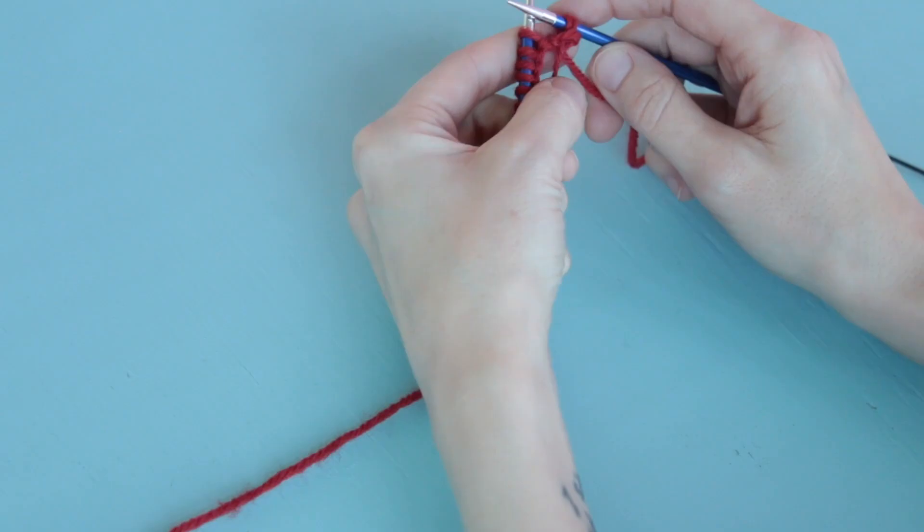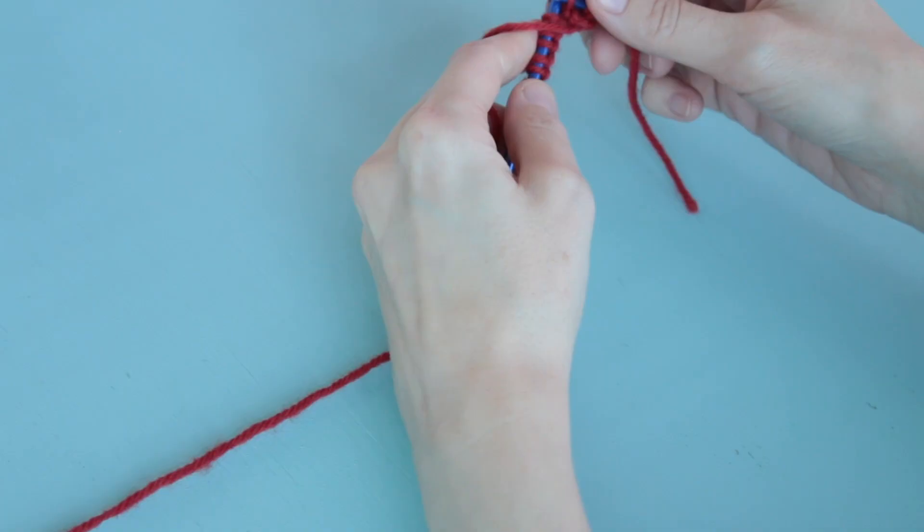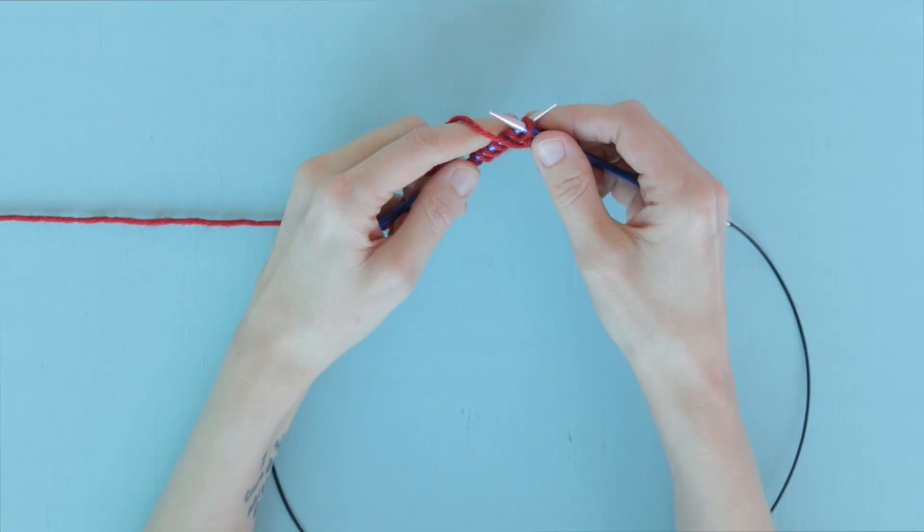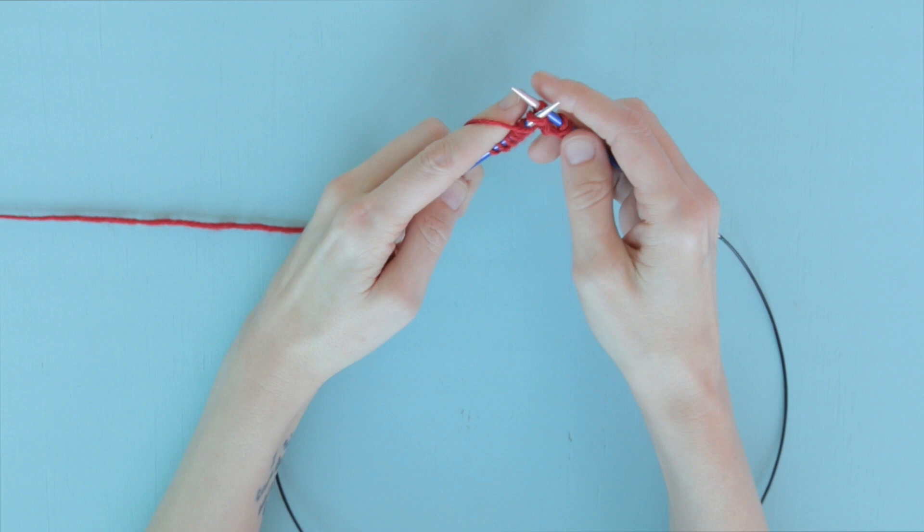Inserting your working needle into the front of the next loop, you're going to wrap that needle twice, and without working too tightly, draw the needle back through and sweep this stitch off. And we're going to keep working like that all the way across this first wrong side row.